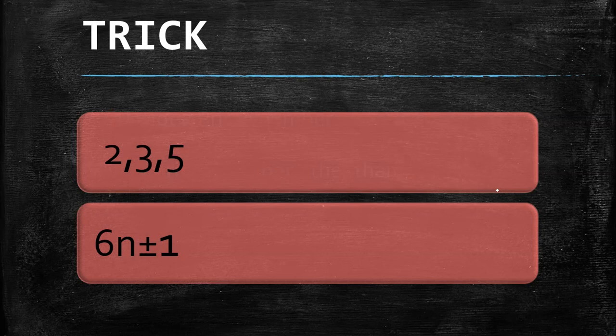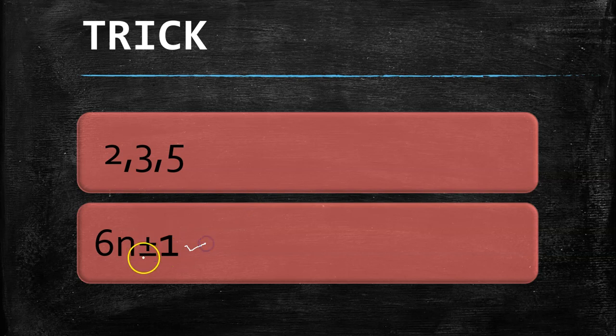You can use this trick to find prime numbers up to 100: the formula is 6n plus or minus 1. Let's see how this works.